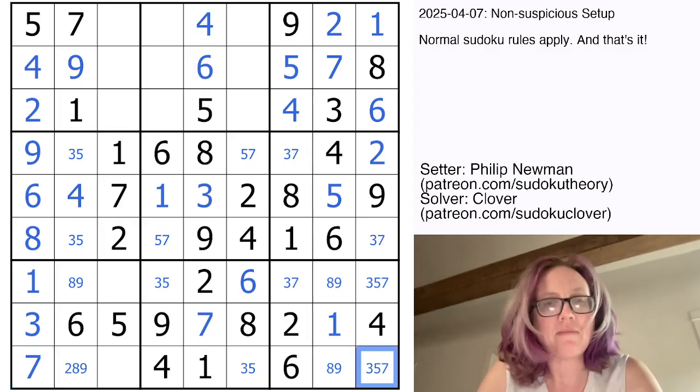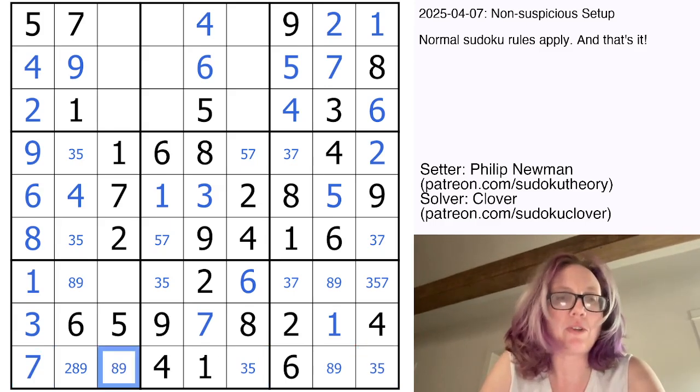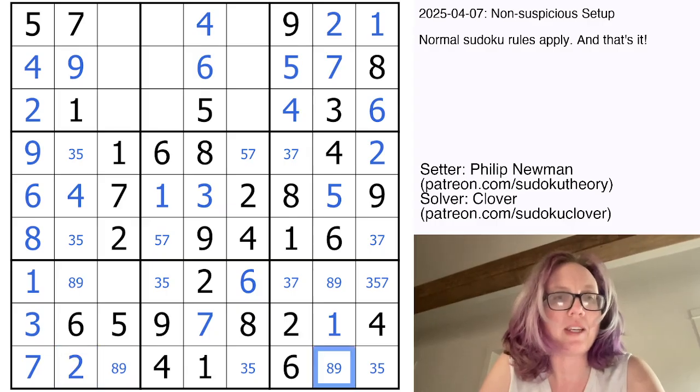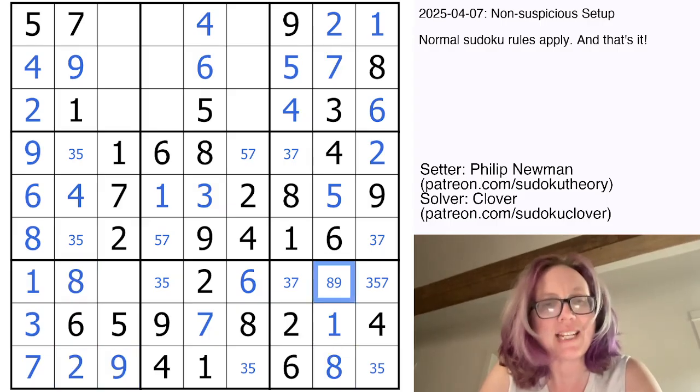This can't be a 7. So I have a 3, 5 pair in the row. Therefore, now this is 2, 8, or 9, and there's a 2 in the column. So that gives me the 2 right here. And the 9 in this column gives me my 8, which is going to take care of these 8s and 9s.